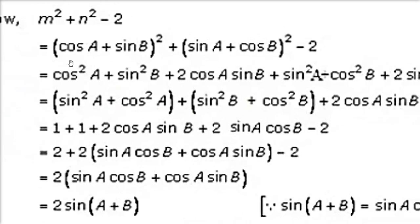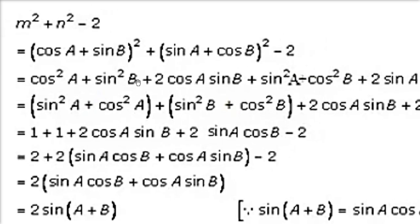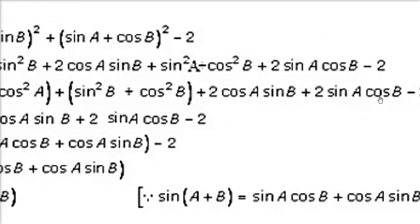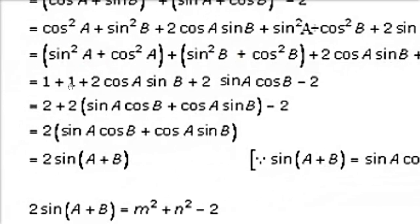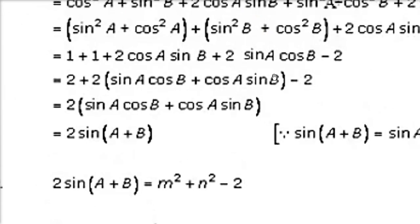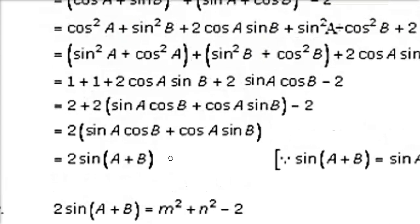Now, take cos²(a) and sin²(a) together — they equal 1. Take sin²(b) and cos²(b) together — also 1. So 1 + 1 = 2. Then you have 2·cos(a)·sin(b) + 2·sin(a)·cos(b). Take 2 as common: inside you get sin(a)·cos(b) + cos(a)·sin(b), which is the formula for sin(a + b). So you get 2·sin(a + b). The 2s cancel from m² + n², giving m² + n² − 2 = 2·sin(a + b). Proved.